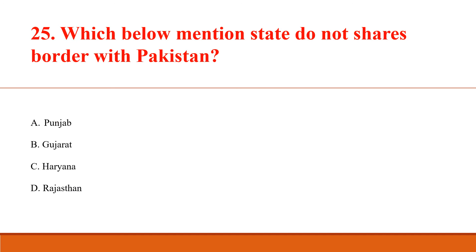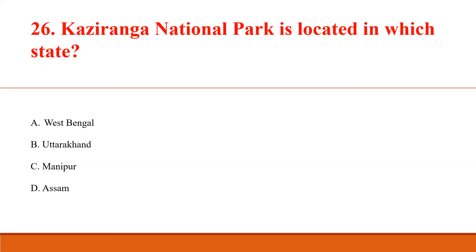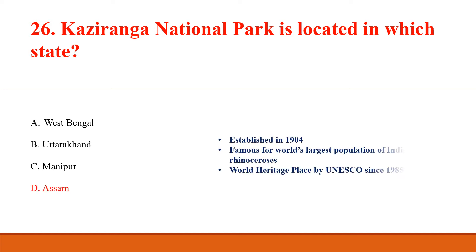Which below mentioned state does not share border with Pakistan? Answer C: Haryana. Total 4 states/UTs — Punjab, Rajasthan, Gujarat, and Jammu & Kashmir — share their border with Pakistan. Kaziranga National Park is located in which state? Answer D: Assam. Established in 1904, famous for the world's largest population of Indian one-horned rhinoceros, and a UNESCO World Heritage Site since 1985.